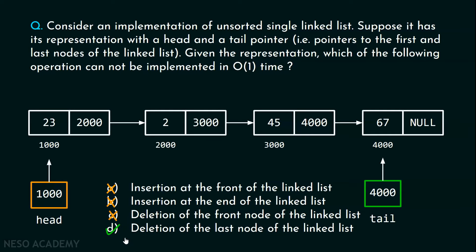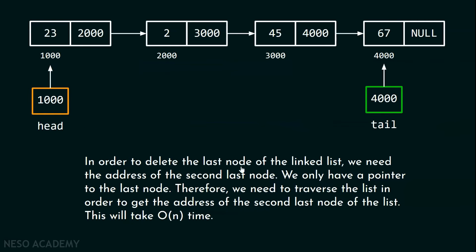Now let's see the last option — and obviously this is the correct answer. Deletion of the last node of the linked list will not take constant time. In order to delete the last node, we need the address of the second-last node. If we delete the last node using the tail pointer, we lose the reference to the second-last node. There must be some way to reach the second-last node so that the tail pointer can point to it and we can update its link part to null. Since we only have a pointer to the last node, we need to traverse the entire list to get the address of the second-last node, and this takes O(n) time.